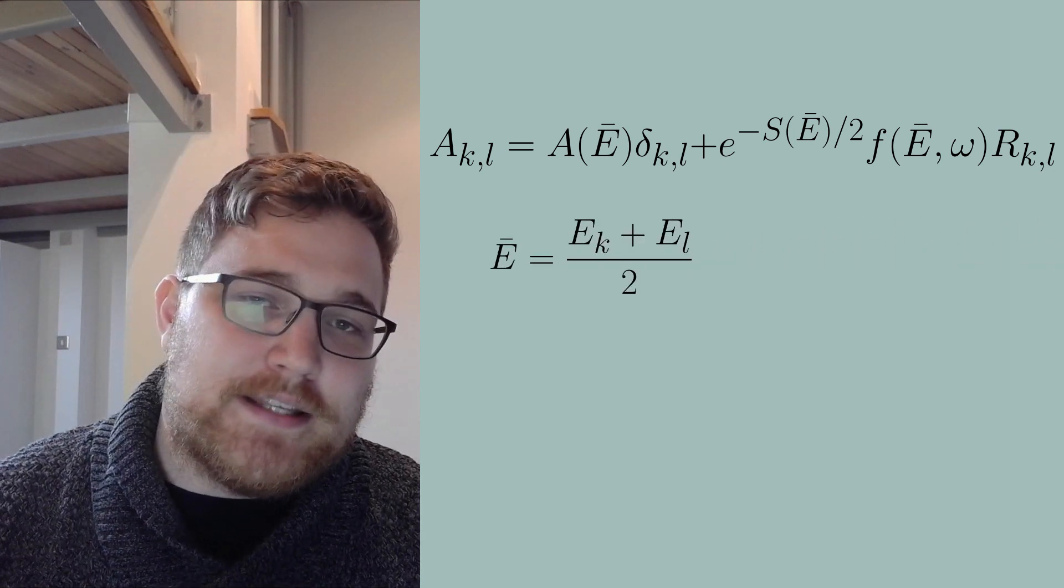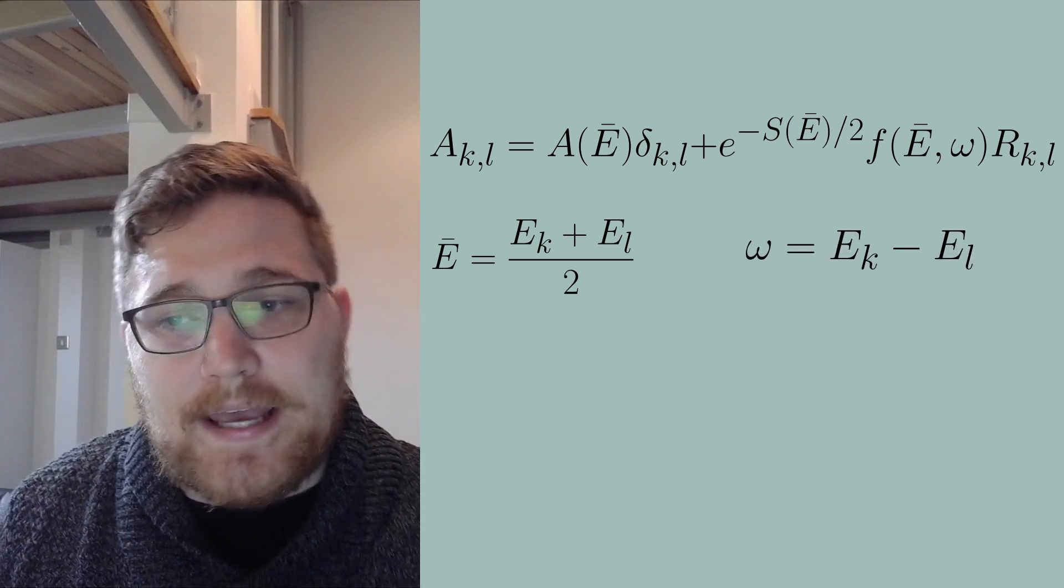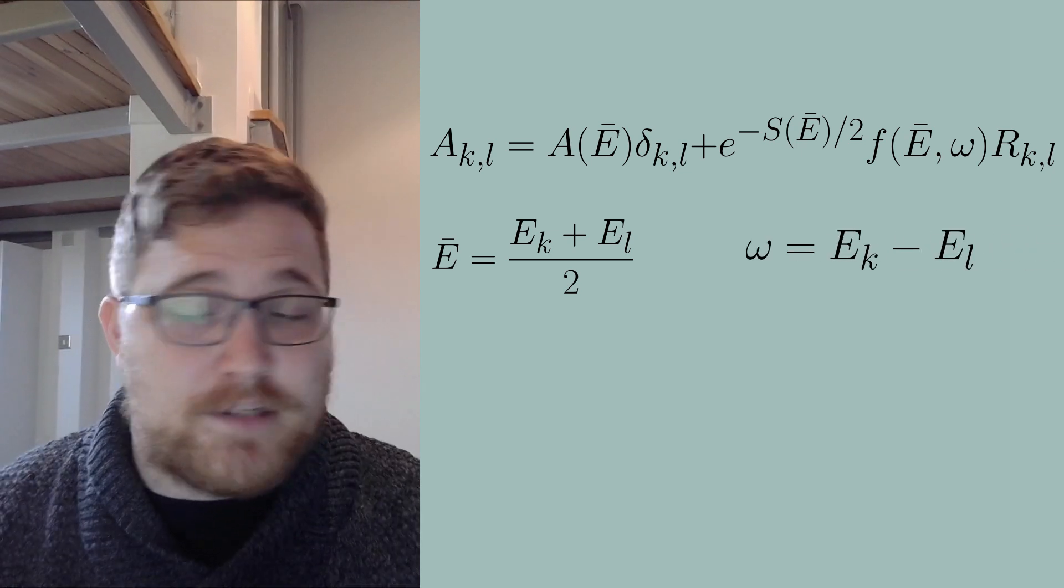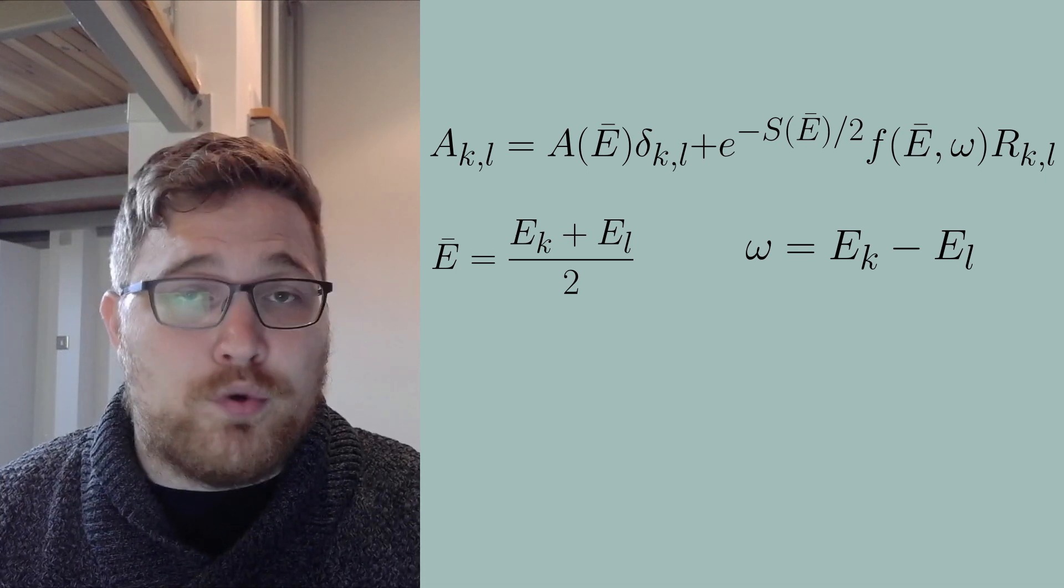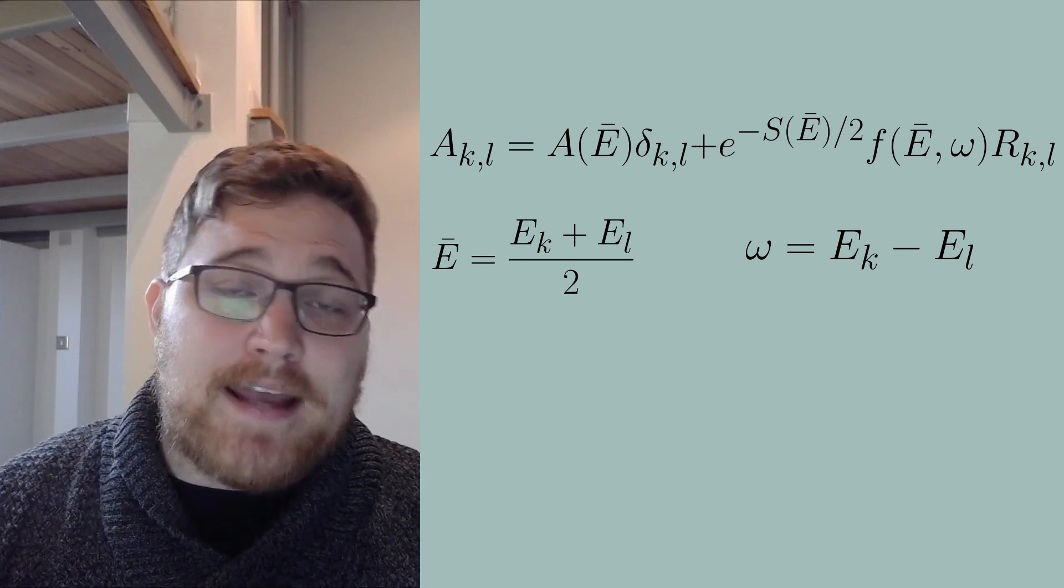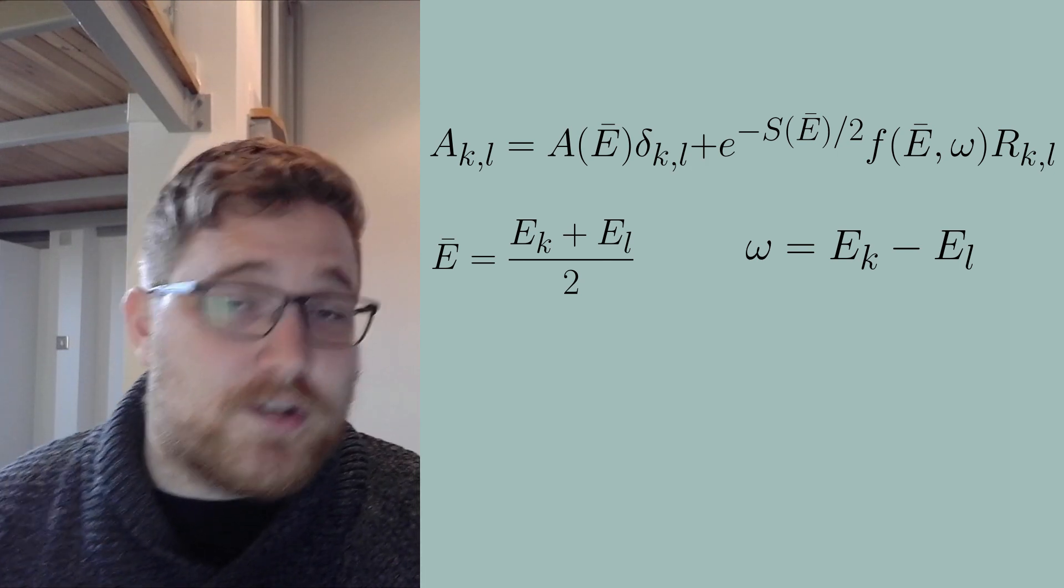Firstly, E bar is the average energy. Then we have the frequency omega. R again is a random variable as before. A of E bar and F of E bar and omega are smooth functions of their argument. And then S of E bar is the thermodynamic entropy.